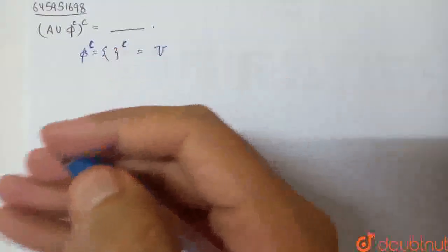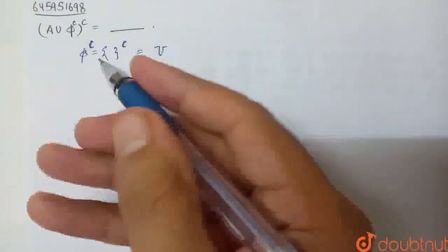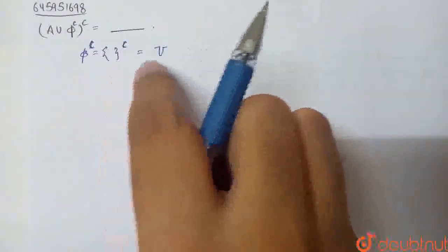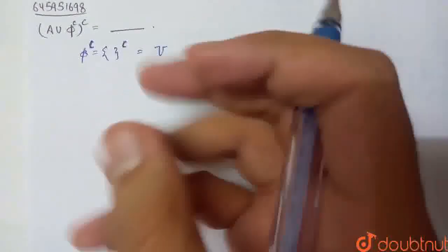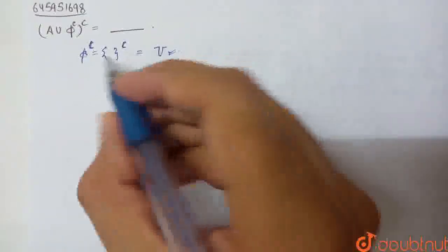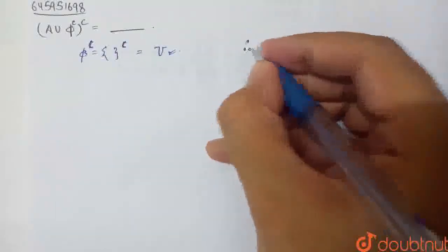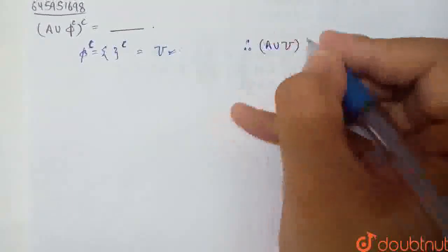Empty set means we have no element in our empty set. So what is the complement of the empty set? Since there are no elements in the empty set, the complement — which contains all elements not in the empty set — gives us the universal set. So we can rewrite the expression as A union universal set, whole complement.